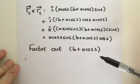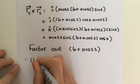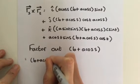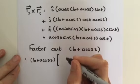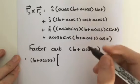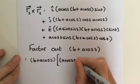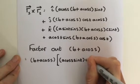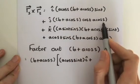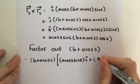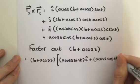The first step is to factor out b plus a cosine of s. We're going to write b plus a cosine of s and put it in square brackets, and we multiply that by — factoring out b plus a cosine of s from the i term — we get a cosine of s multiplied by the sine of t, and we multiply that by i. Then we add — factoring out b plus a cosine of s from the j term — we get a cosine of s multiplied by the cosine of t, and we multiply that by j.